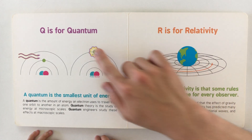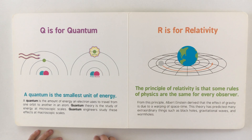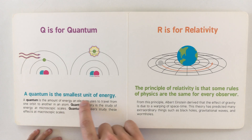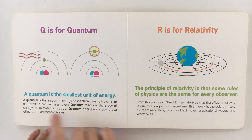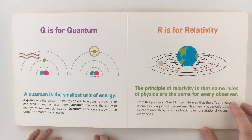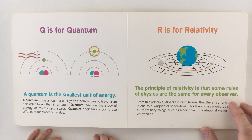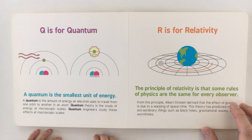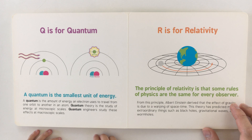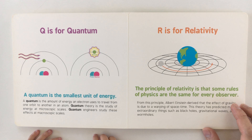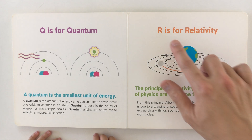Q is for quantum — remember the quantum book we just read? A quantum is the smallest unit of energy. A quantum is the amount of energy an electron uses to travel from one orbit to another in an atom. Quantum theory is the study of energy at microscopic scales; quantum engineers study these effects at macroscopic scales.